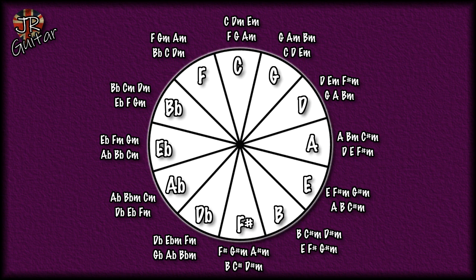Knowing how closely or distantly keys are related gives you a better chance of figuring out what chords are in a song you're struggling with, or maybe gives you a fresh take on including new chords in a song you're writing. Valuable knowledge either way — and it's all right there on the cycle of fifths. If you're ever confused about what notes you're playing, maybe when using a pentatonic scale pattern and you don't know the notes in it, the cycle of fifths can help with that as well.